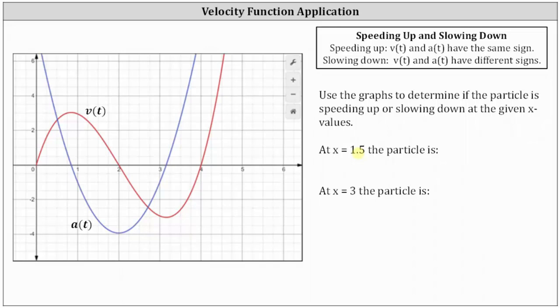In general, the particle is speeding up when the velocity and acceleration have the same sign, and the particle is slowing down when the velocity and acceleration have different signs.